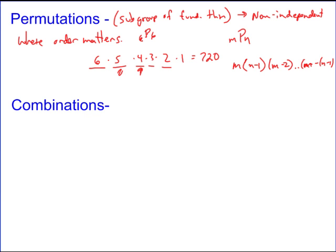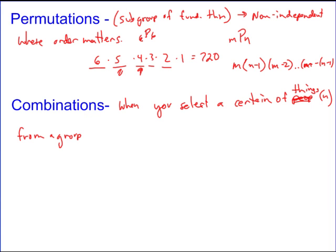Combinations are when you select a certain number of people or things, we'll call that n, from a group of m things. You've got a group of m things laying around. You want to pick or select n of them. Maybe you have 12 things sitting around and you want to select two of them. How many ways can you do this? Well, the reason this is different is because with combinations, order doesn't matter.